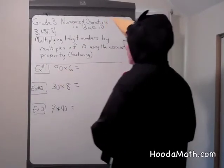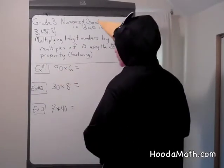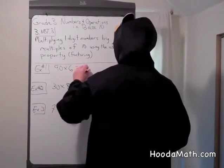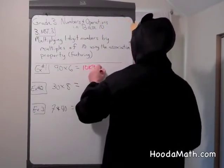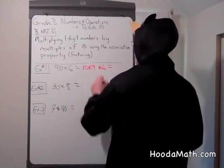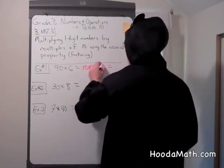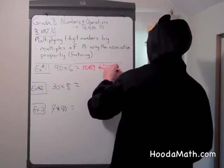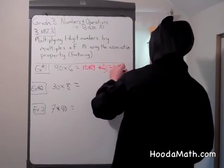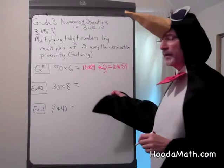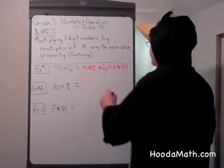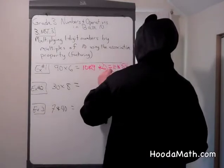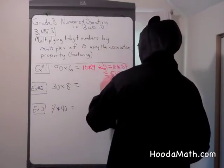90 times 6. We can factor 90 into 10 times 9, then multiply that by 6. We should associate the 9 times 6 first. So now you have 10 times 54. When you multiply 10 times a whole number, you add a 0 to the right. So we get 540 as our product.